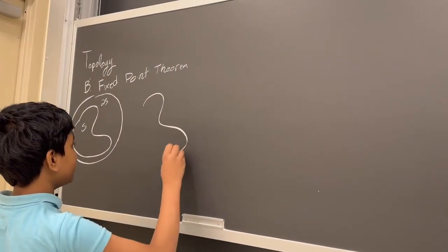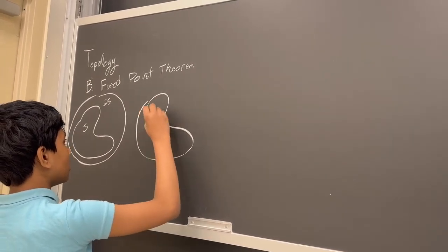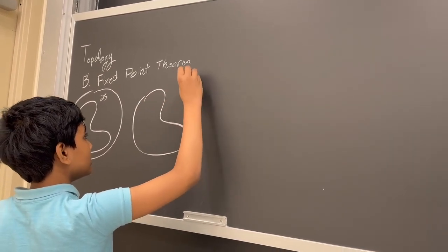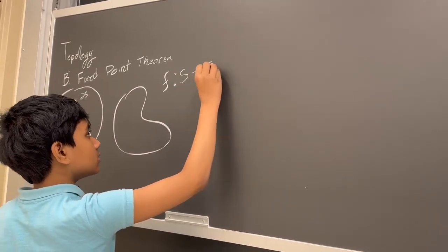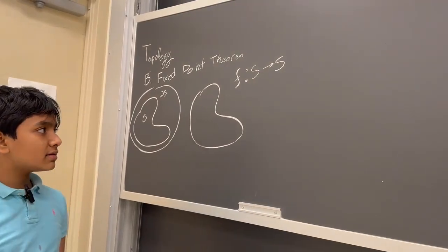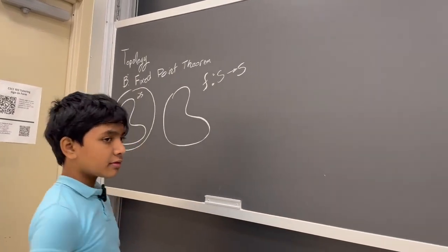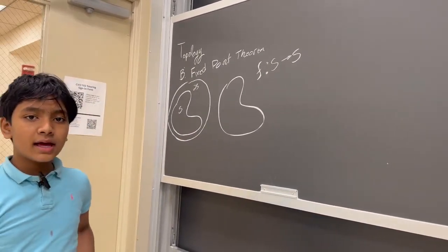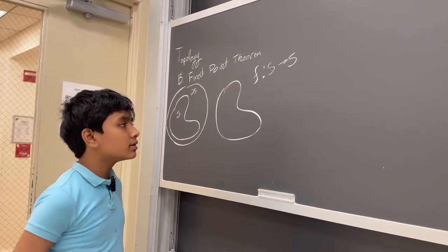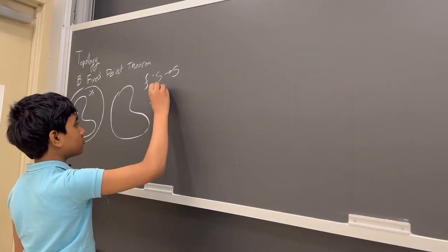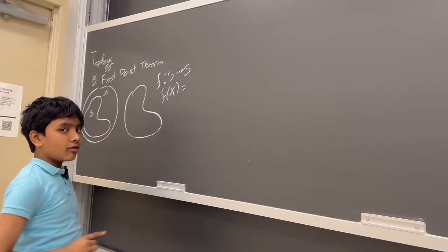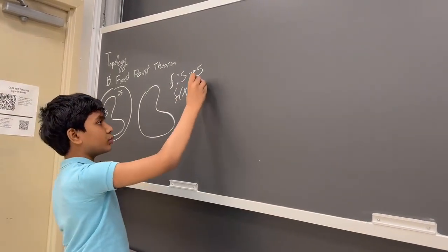Then, any function that acts on every point in the set, there will always be something known as a fixed point, i.e. where f of that point is just that point again.